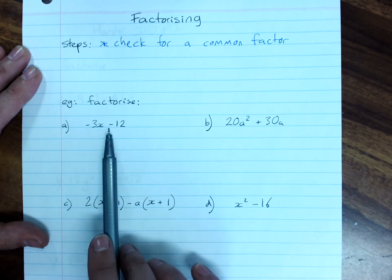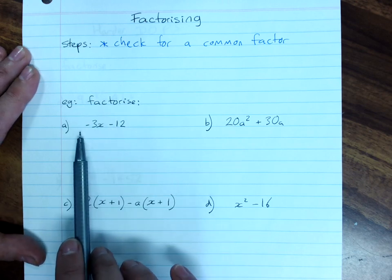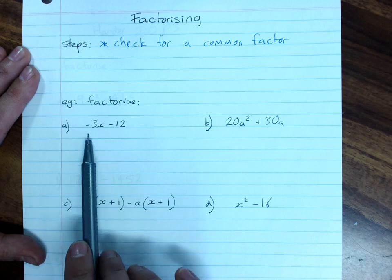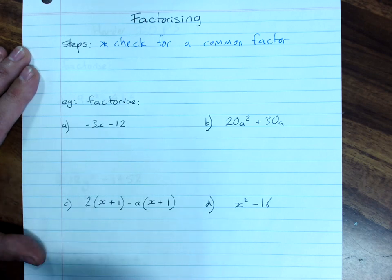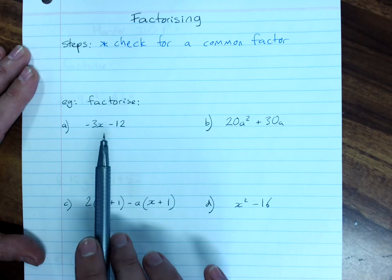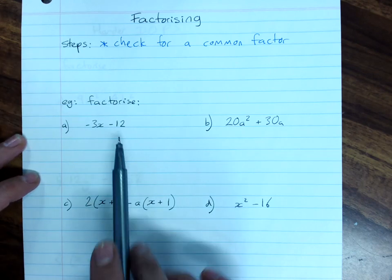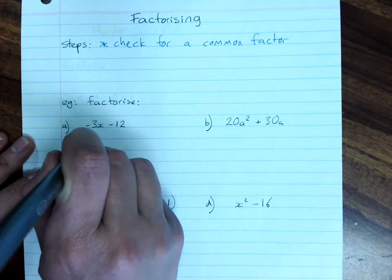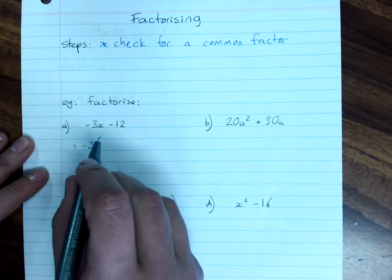Negative 3x minus 12. Always remember that if your first term is a negative, you will be factorizing out a negative highest common factor. The HCF here is negative 3.